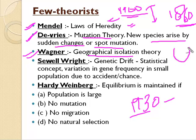Then there is Wagner's theory of geographical isolation. Wagner says that if any particular species is left isolated in a particular environment, it will develop certain characteristics. That is Wagner's theory of geographical isolation.